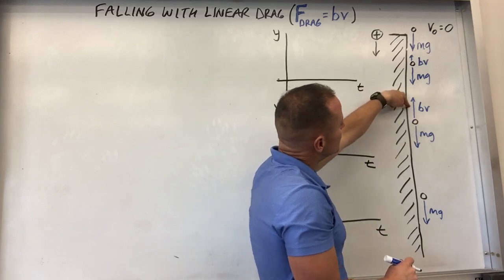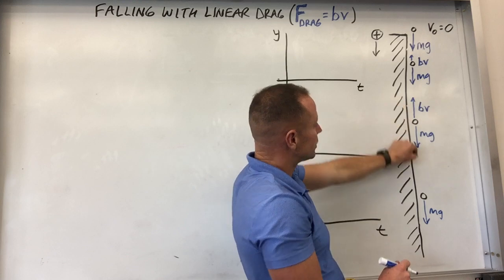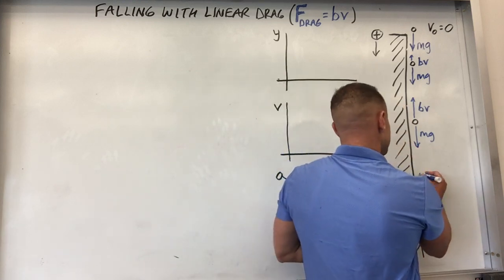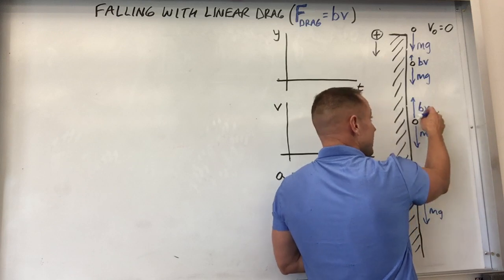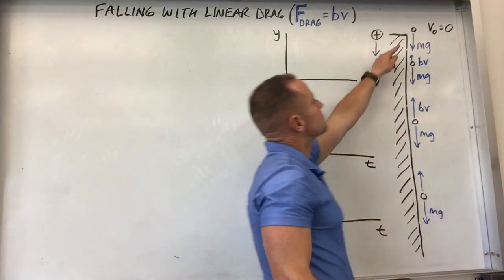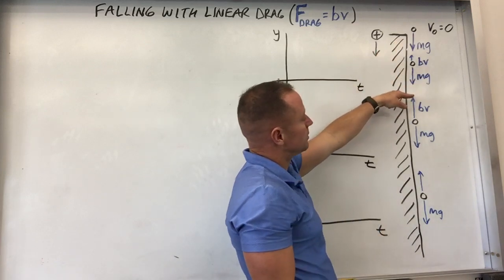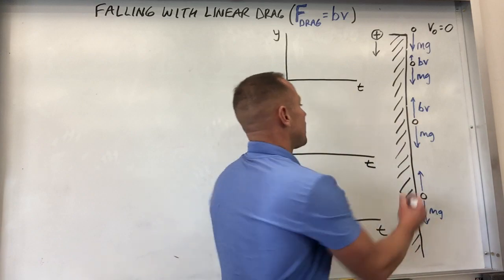Well, if these forces balance, then the net force is zero. And so the thing shouldn't gain any more speed. So it should stay at that speed, at the speed that it is at the moment that those two become equal. It will stay there. So the speed will build up to what's called terminal velocity, terminal speed, and then it'll continue to fall at that speed.